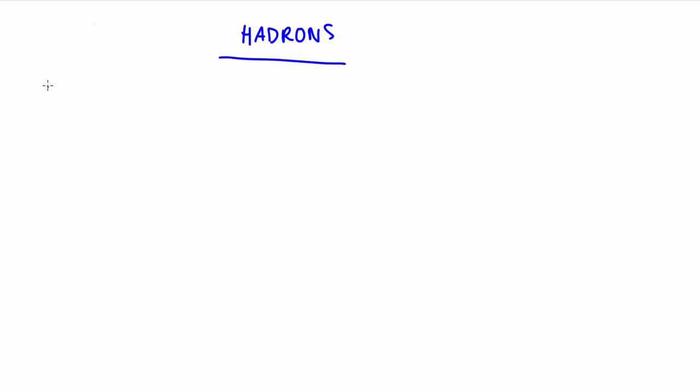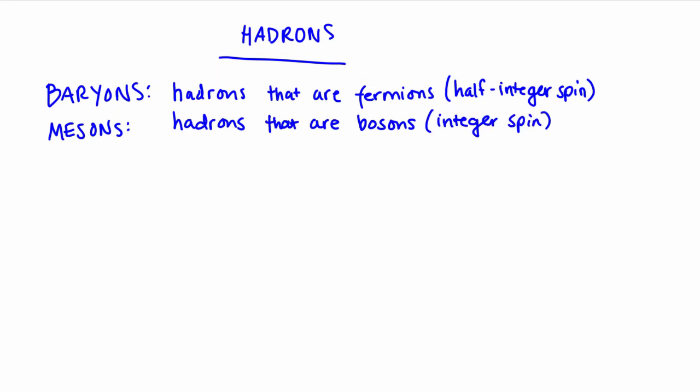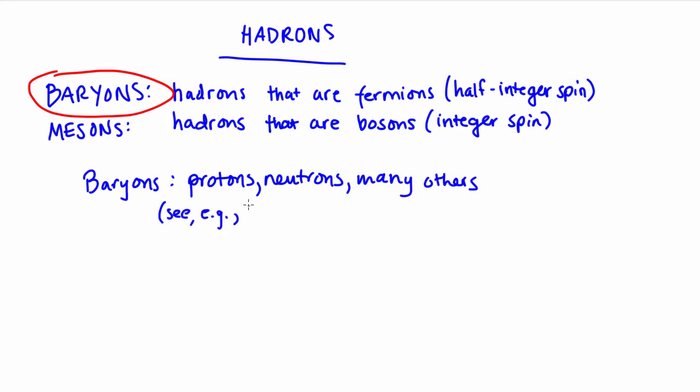Hadrons can either be fermions with half-integer spin or bosons with integer spin. Hadrons that are fermions are called baryons, and hadrons that are bosons are called mesons. We know some baryons already. The proton and the neutron are good examples, and as it turns out, the proton is the lightest baryon out there.